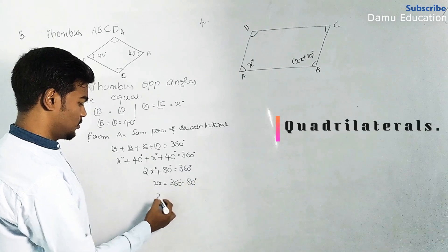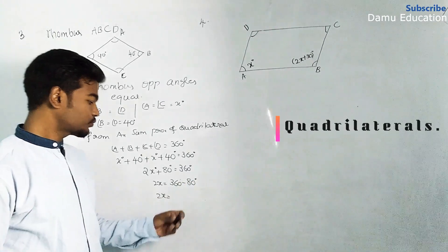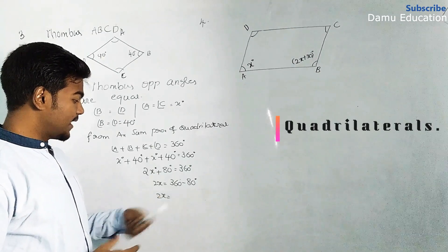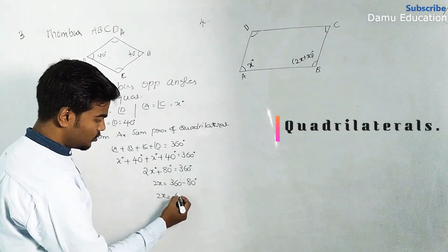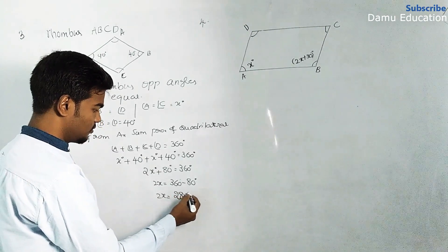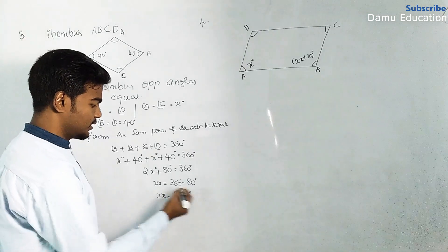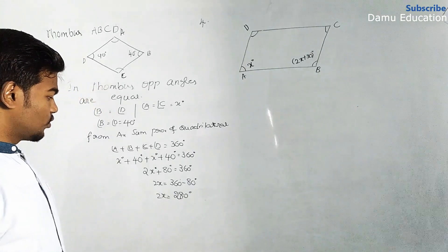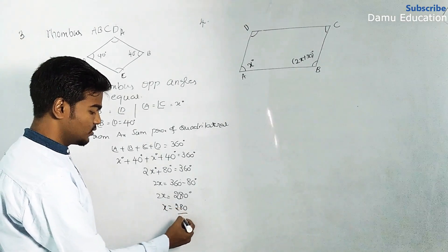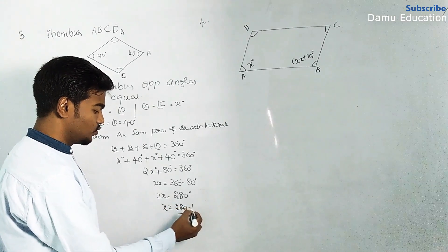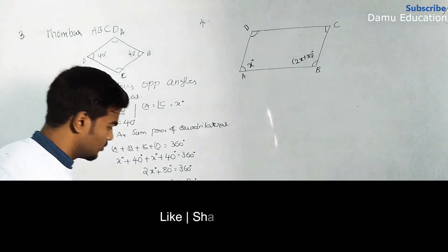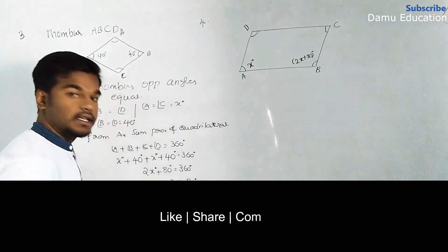Then 2x equals 360 minus 80, which is 280 degrees. So 2x equals 280 degrees. Therefore x equals 280 divided by 2, which gives x equal to 140 degrees.